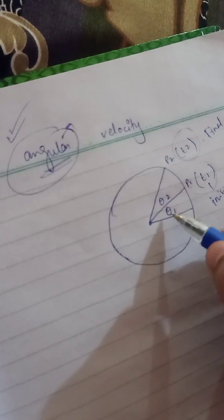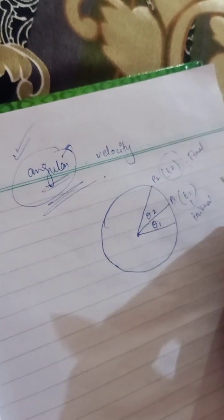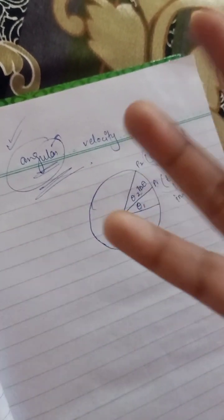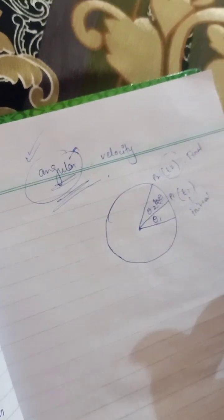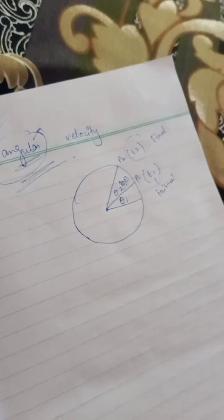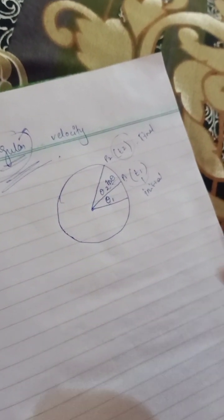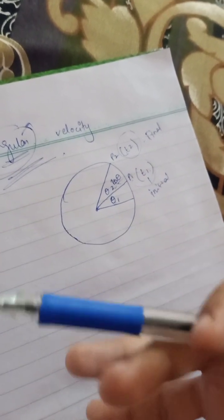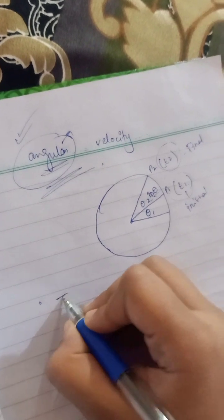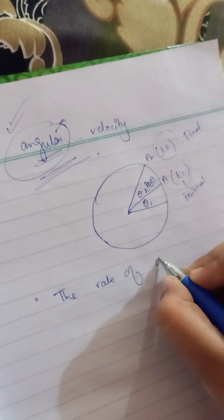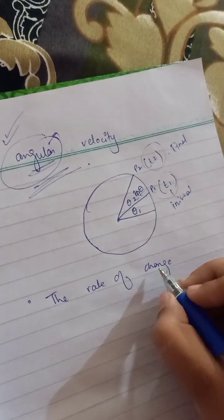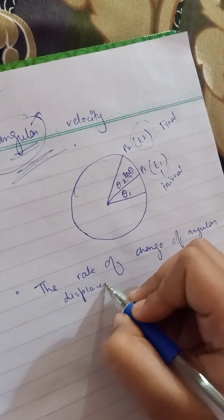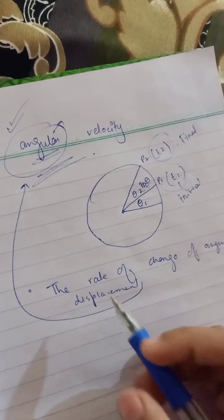With respect to time, there is a change in theta — that is called angular velocity. The change in theta, which is the change in angular displacement, is called angular velocity. The definition is: the rate of change of angular displacement with respect to time is called angular velocity.